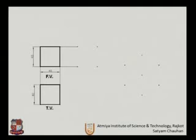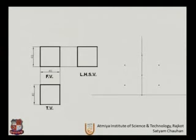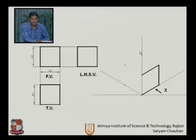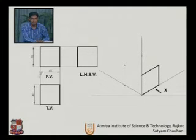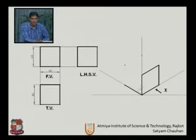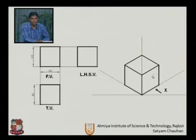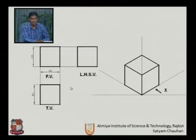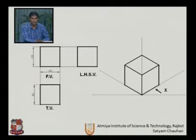Here we have a 40 by 40 square drawn in first angle. To draw the isometric view, we first create the isometric axis. Starting with the front view — 40 mm length and 40 mm height — then proceeding with the left-hand side view, and joining the lines to complete the top view. This completes the isometric drawing of the cube. This is how we approach isometric drawing from orthographic views; usually orthographic views are given and we proceed for the isometric drawing based on those.